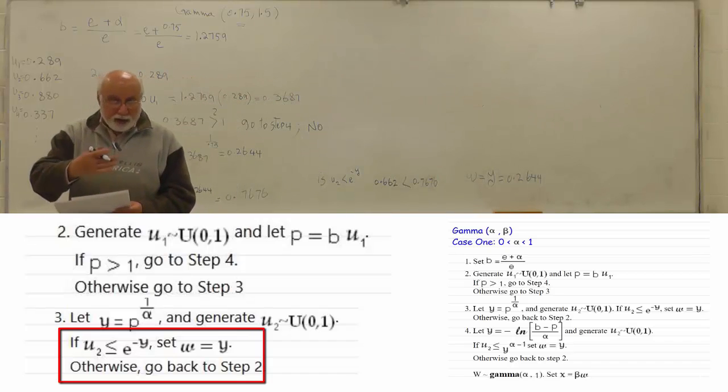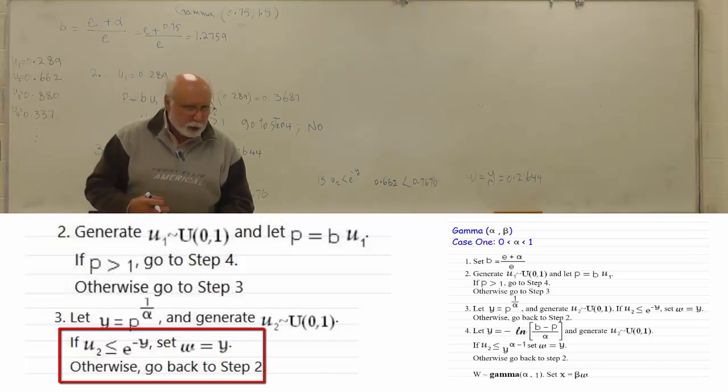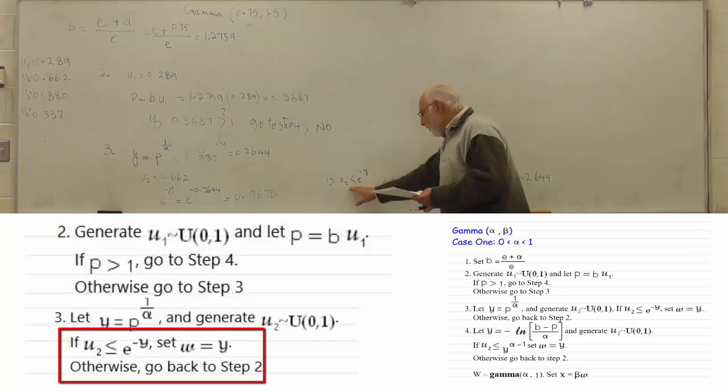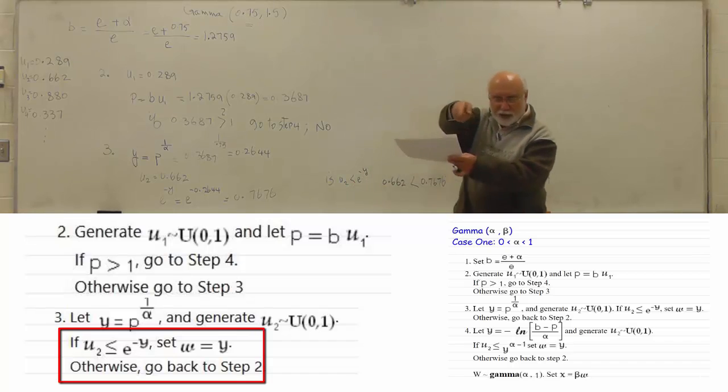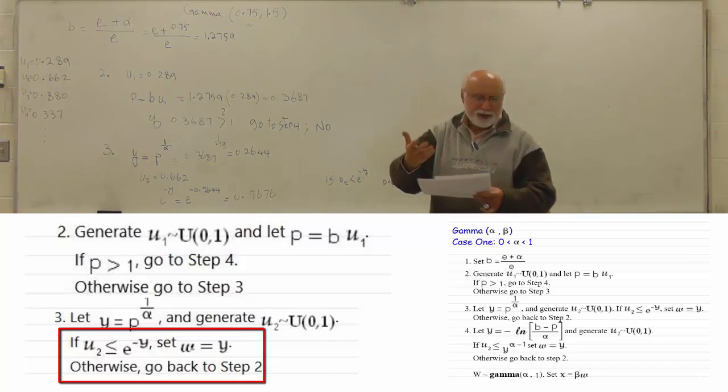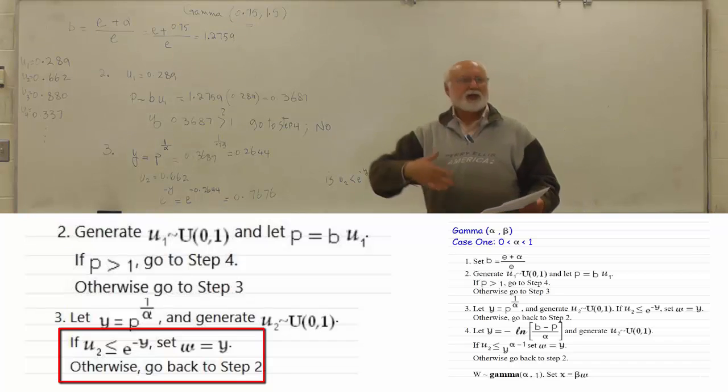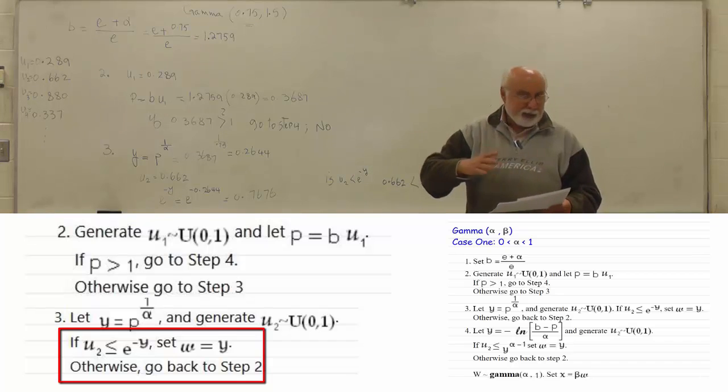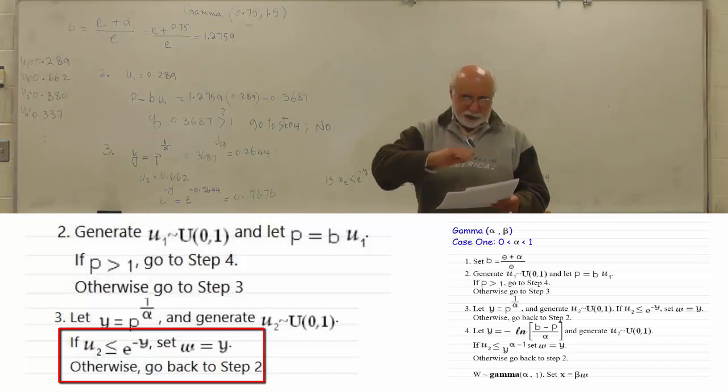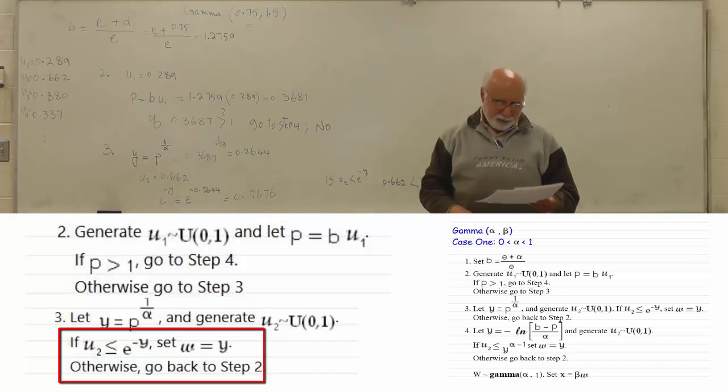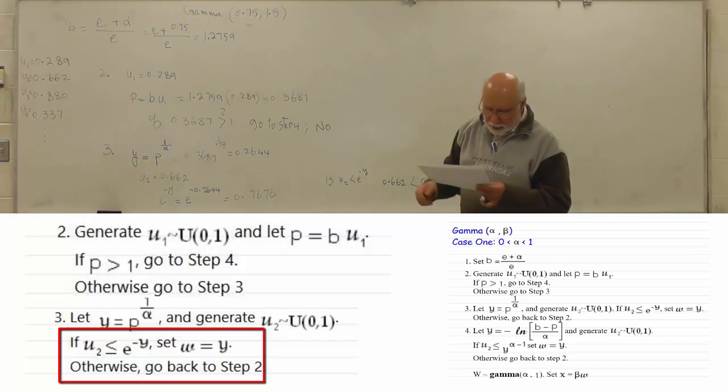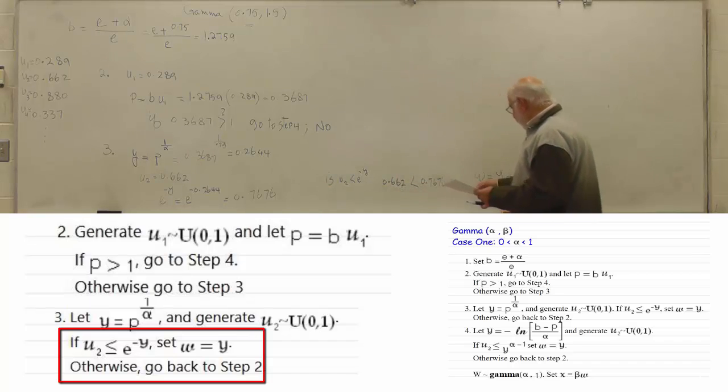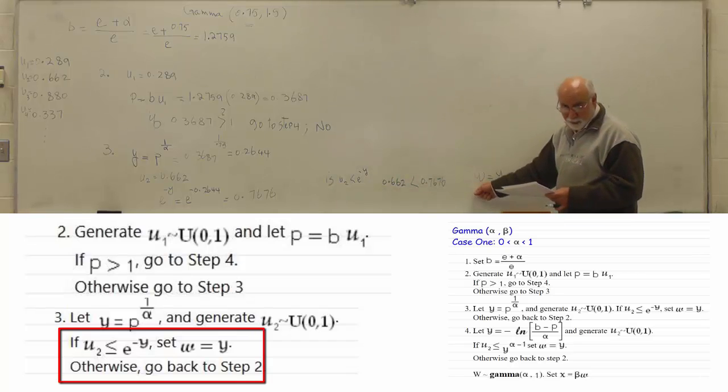So we calculate E to minus Y, which is going to be E to minus 0.2644, which equals 0.7676. Is U2 less than E to minus Y? It is smaller, then set W equal to Y. So W is equal to 0.2644.